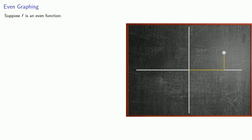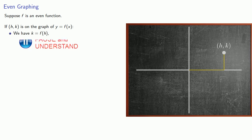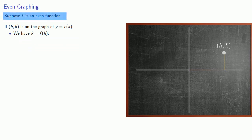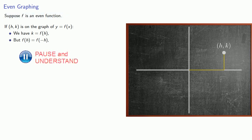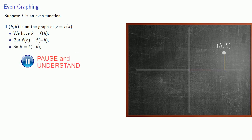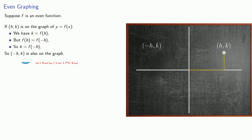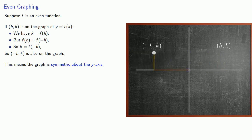What about graphing? Suppose f is an even function. If some point h, k is on the graph of y equals f of x, we have k equals f of h. But because f is an even function, we have f of h equals f of negative h. Equals means replaceable. Since k equals f of h, we have k equals f of negative h. And so the point negative h, k is also on the graph. This means the graph is symmetric about the y-axis.